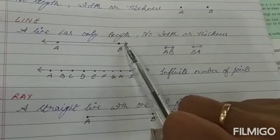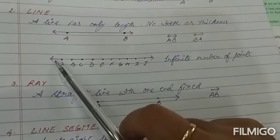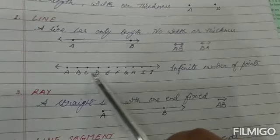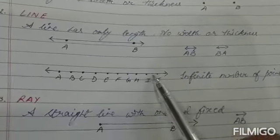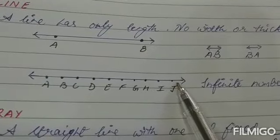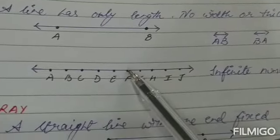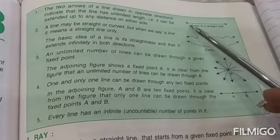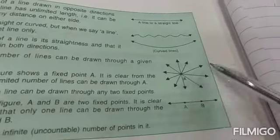Every line has certain properties. Every line can have an infinite number of points — as you can see, I have named points A, B, C, D up to J, but there are infinite points on any given line. A line can be a straight line or a curved line. Through any one point, there can be an infinite number of lines passing through it. This shows that as many lines as you want can pass through one given point.